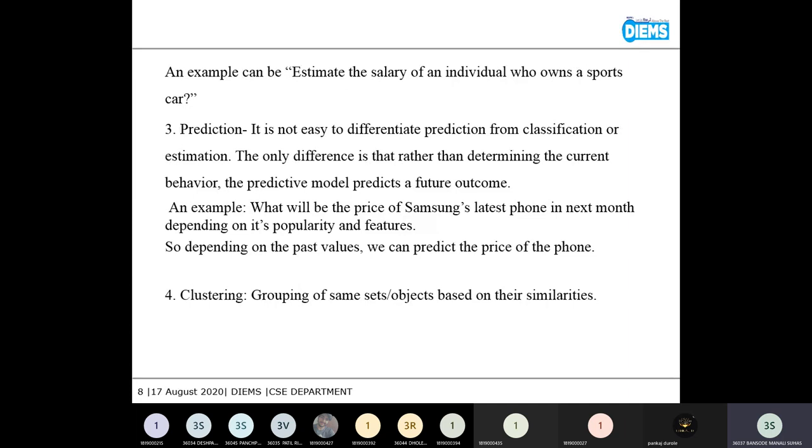Next is prediction. It is not easy to differentiate prediction from classification or estimation. The only difference between prediction and classification is that the predictive model predicts a future outcome. The example of it would be what will be the price of Samsung's latest phone in next month depending on its popularity and its features. So depending on the past values, we can predict the price of the phone.